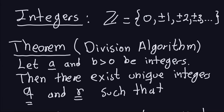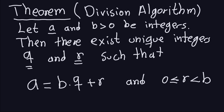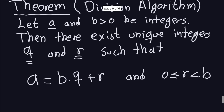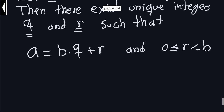In the previous video we talked about the division algorithm. The division algorithm is not actually an algorithm — it's just a fact about mathematics, something you already know from primary school. If you have two integers a and b, for the moment assuming b is positive, there always exist unique integers q and r such that a equals b times q plus r.